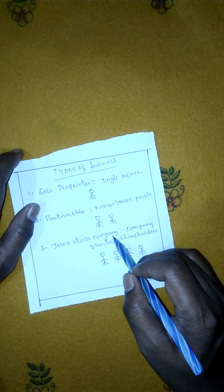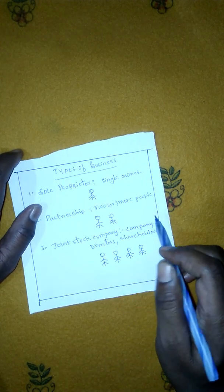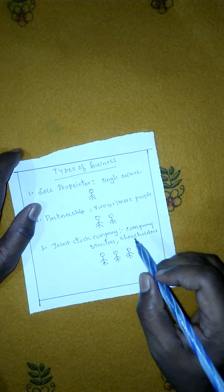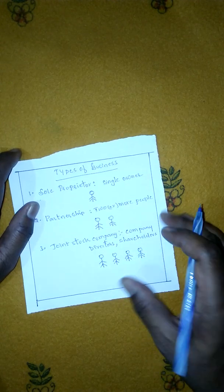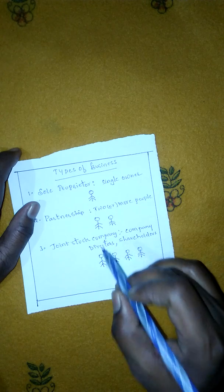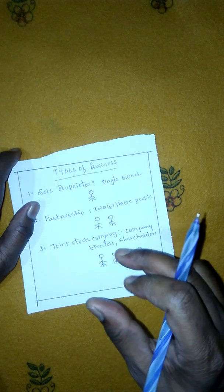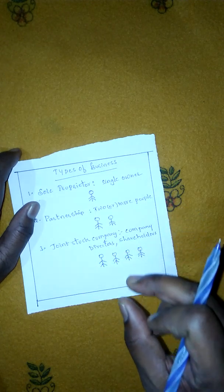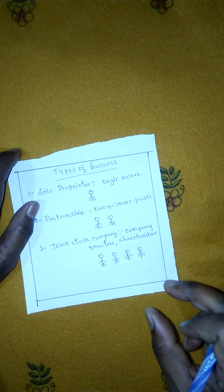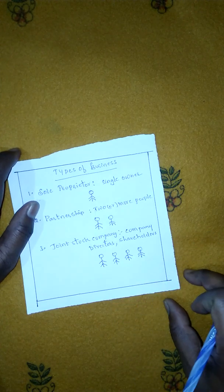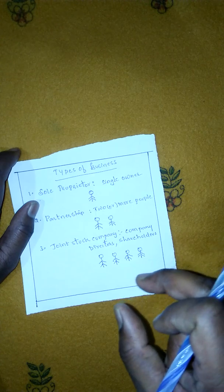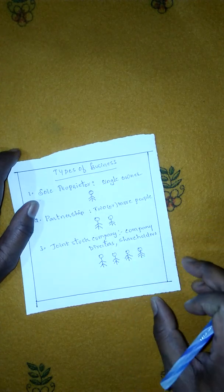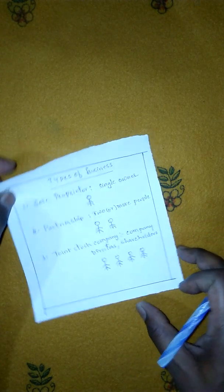The third type is joint stock company, where a board of directors, shareholders, and other investors are involved. Company accounts follow a separate company account format with its own rules and calculations.